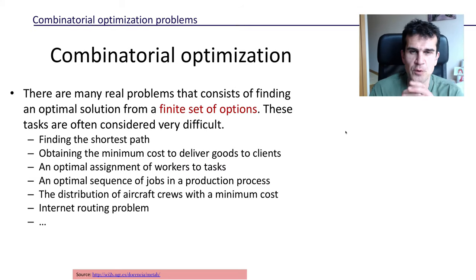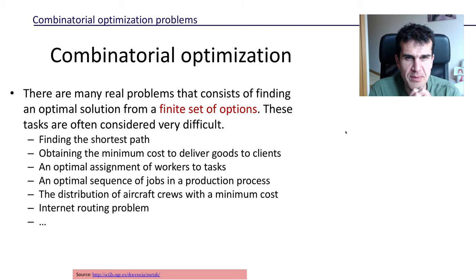Hi guys, in this video we're going to see the kind of problems we're going to deal with here. These are combinatorial optimization problems, where the set of options from which we have to select the best one is, in principle, finite. That is the key. The difficulty usually comes because even though the set is finite, it is huge.